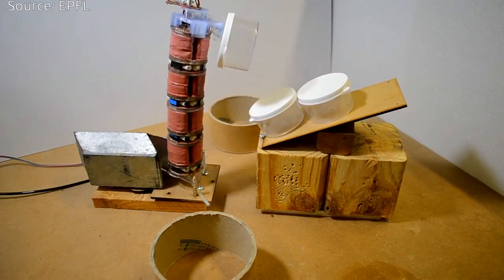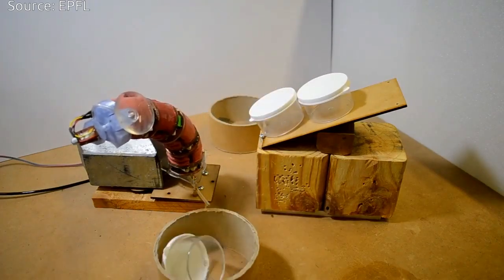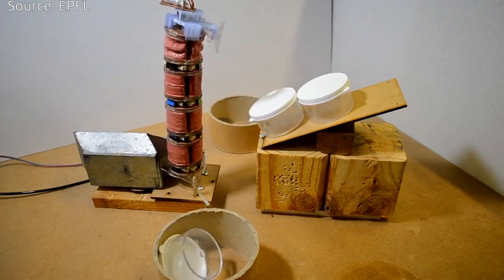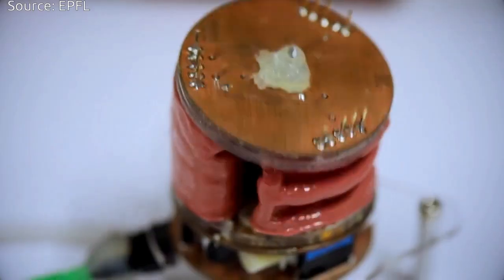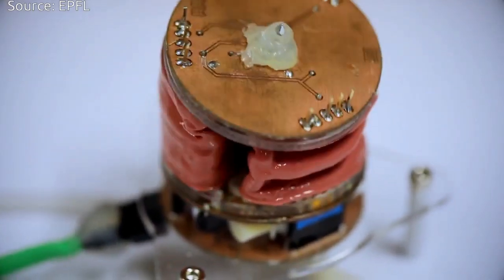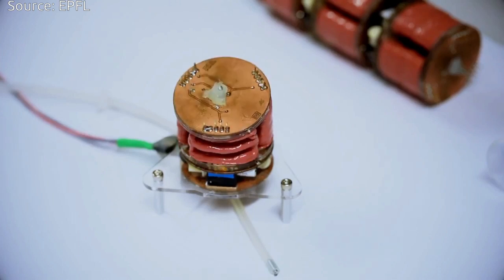EPFL scientists have created the first functional robot powered entirely by vacuum. Made up of soft building blocks, it moves by having air sucked out of them. The robot can be reconfigured to perform different tasks like climbing vertical walls and grabbing objects.